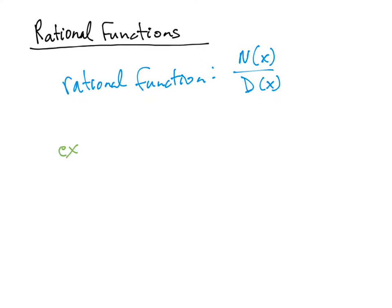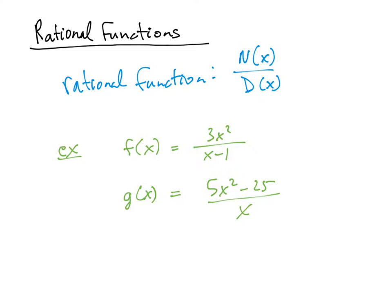A few examples of rational polynomials: we could have 3x squared divided by x minus 1 — two polynomials getting divided. We could have 5x squared minus 25 divided by x. Or h of x equal to 3x squared minus 1. This one doesn't look like we're dividing two polynomials, but it's the same as 3x squared minus 1 divided by 1 — and 1 is a polynomial, it's just a constant polynomial. So all three of these are rational functions.